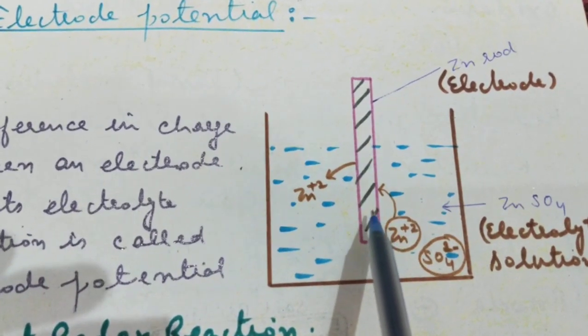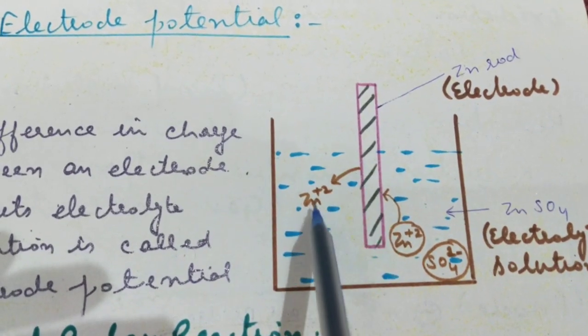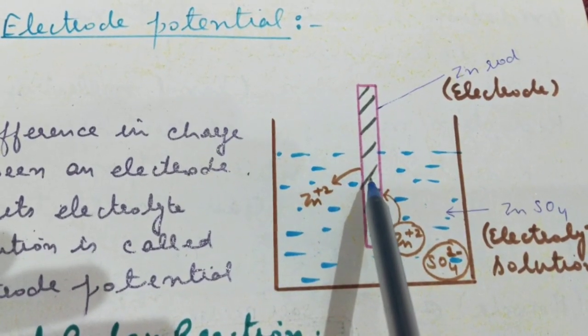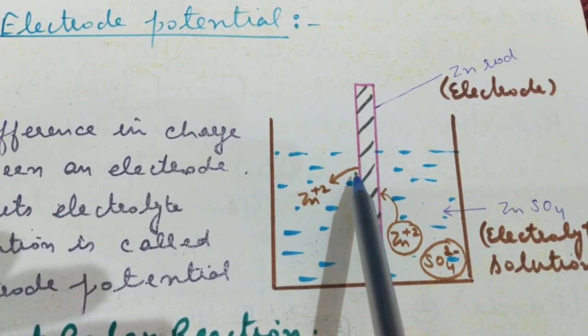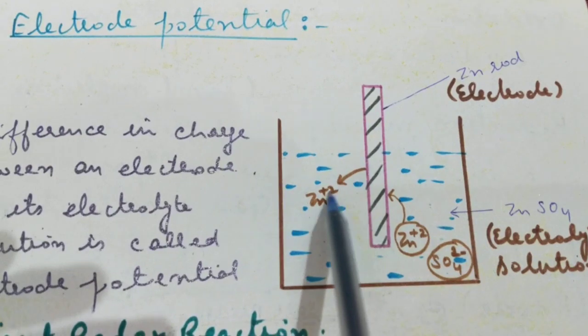But sometimes due to some impurities, maybe in the solution or in the rod, some Zn+2 ions from the rod come to the solution.